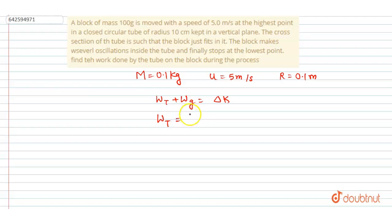We want the work done by the tube, so we will do change in kinetic energy minus work done by gravity, which will be the net work done by the tube.